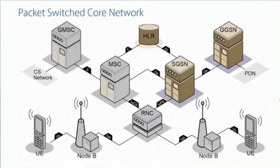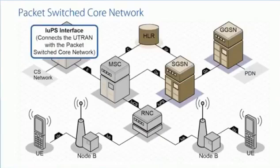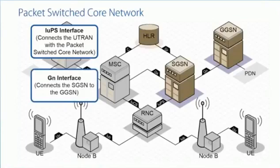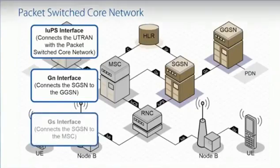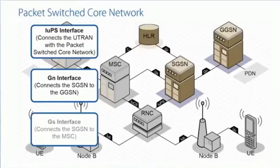Now let's look at the packet switch side to support the data aspects. We're going to go across the IUPS — the interface for UMTS packet switched — which is how the radio access network connects to the packet switch core. We also have interfaces known as the GN. A lot of the interfaces on the packet switch side are called G for, historically, GPRS — N for node, going between different GPRS support nodes. Specifically, we've got two types: the SGSN and GGSN, a serving GPRS support node and a gateway GPRS support node. We also have a GS interface — S for switch — going between the SGSN and an MSC, used for combined procedures to reduce signaling on the air interface.